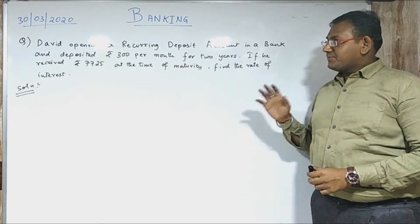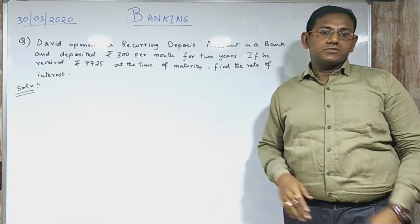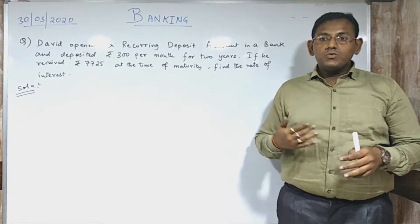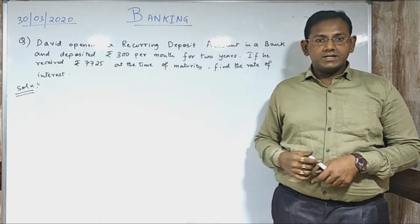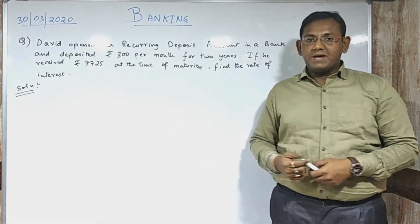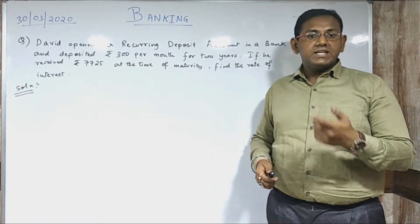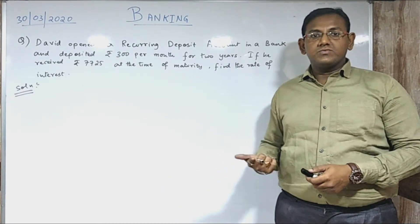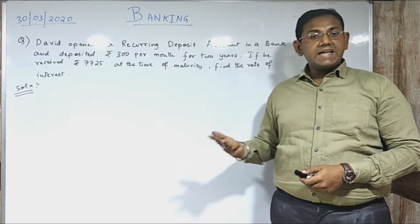I hope that you have already understood the previous question. In the previous question, when you were solving it, you had to calculate the interest where your principal, rate, and time were already given. Now there are different types of questions that come in the case of banking. There might be questions where you need to find out the principal, the rate of interest, or the time.